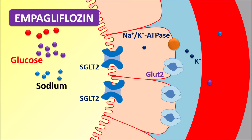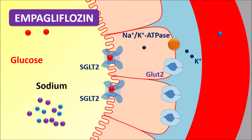Empagliflozin blocks this action — it is an inhibitor of the SGLT2 transporter. When this transporter is inhibited, both glucose and sodium cannot enter into the systemic circulation; instead, they are excreted in the urine through the filtrate. As sodium and glucose are excreted, their levels within the blood are reduced. This reduces excessive glucose and sodium levels, which reduces body volume, thereby reducing cardiac work, renal workload, and that is why empagliflozin can be given in people with risk of heart failure and chronic kidney disease.